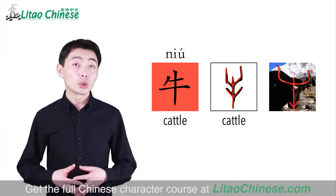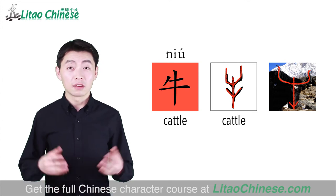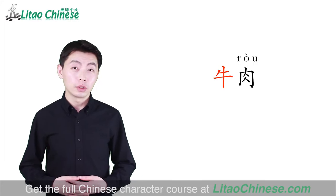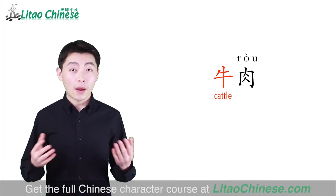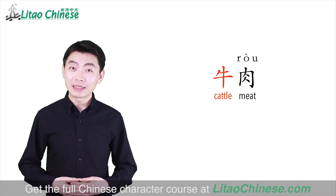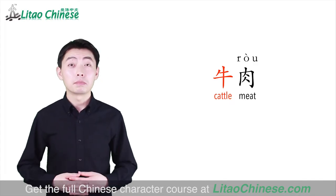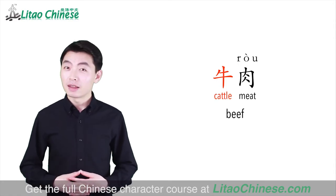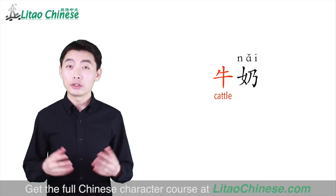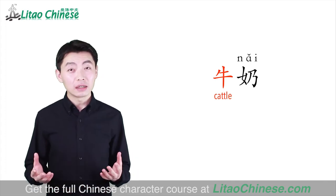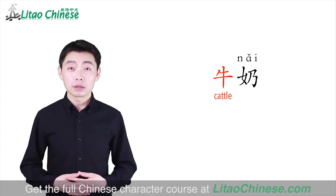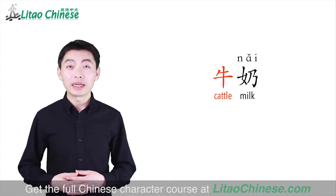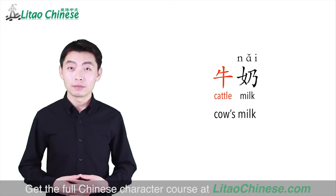Let's look at two words with the character 牛. The first one: 牛肉. 牛肉 means beef — the character 肉 means meat, so cattle meat is beef. The second one: 牛奶. The meaning of the character 奶 is milk, so 牛奶 means cow's milk.